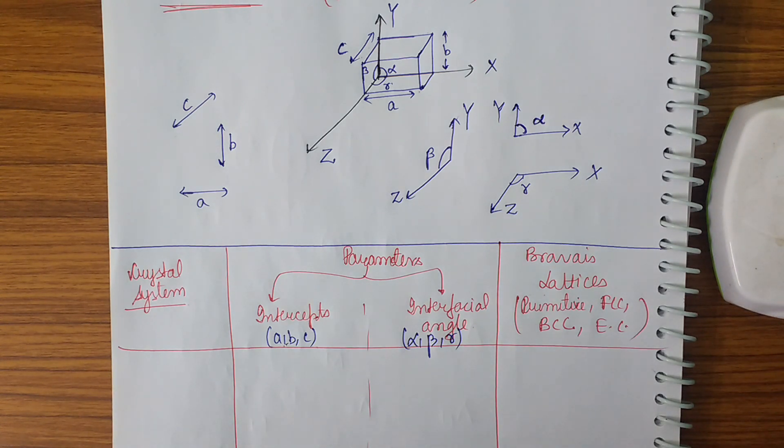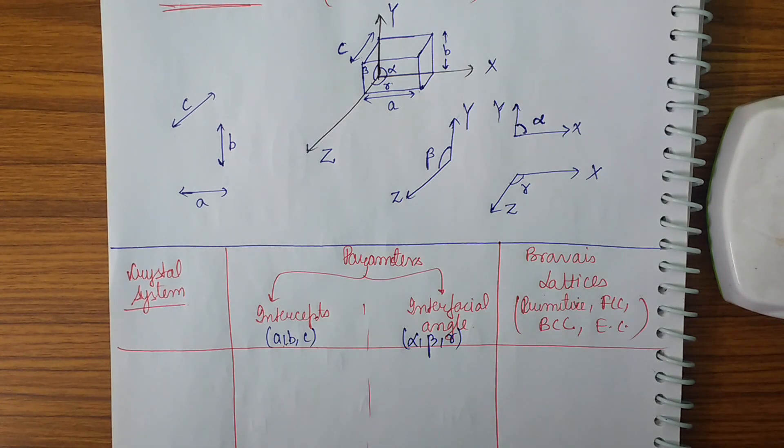So basically how many crystal systems should I get? Three into three, that is nine through basic permutations and combinations. But how many crystal systems do we have? Only seven. Why? Because some of the systems get repeated so they are not taken into consideration.